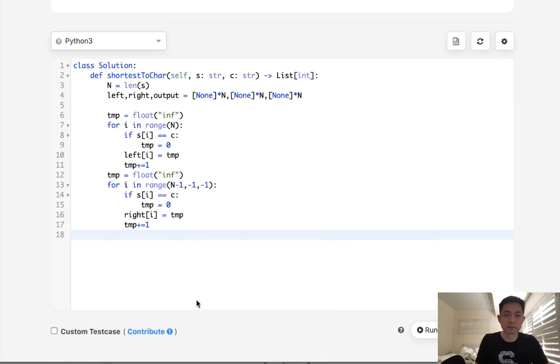Now finally, all we need to do is update our output for i in range of n. Let's make our output of i equal to the minimum between our right i and left i. And finally, just return that output.